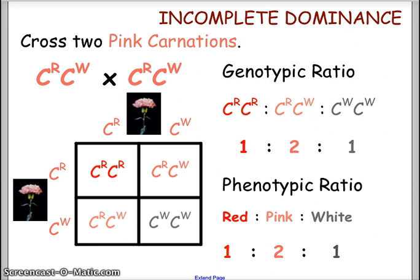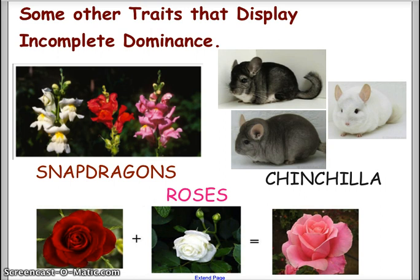Other examples of incomplete dominance include snapdragons, where white and red flowers produce pink flowers, and roses, where red and white also make pink. Chinchillas are another example — black and white chinchillas produce gray offspring. If you pet that chinchilla fur, you can actually see individual white and black hairs giving it that gray appearance.